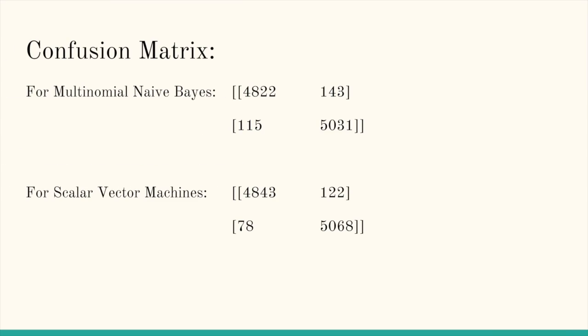We made the confusion matrix for both models. For Multinomial Naive Bayes, the true positive rate comes out to be 4,822 and another value is 5,031. For Support Vector Machines, it comes out to be 4,843 and 5,068.